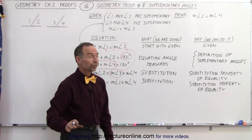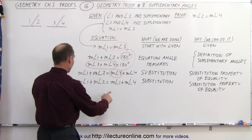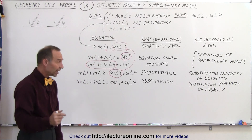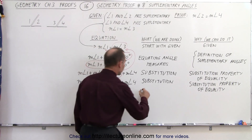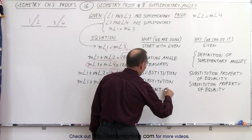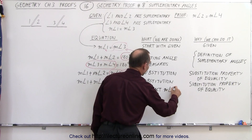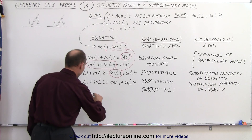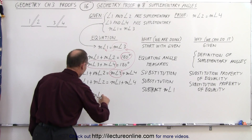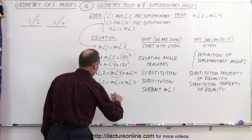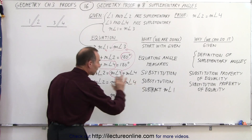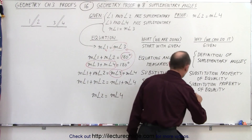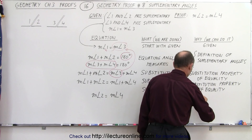Now we're almost there. Notice we have the measure of angle 1 on both sides. We can subtract the measure of angle 1 from both sides, and we end up with simply the measure of angle 2 equals the measure of angle 4. We're allowed to do this because of the subtraction property of equality.